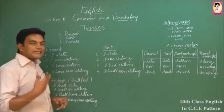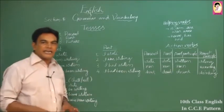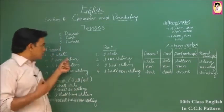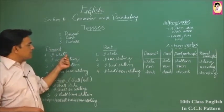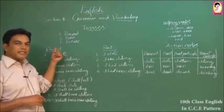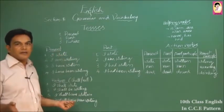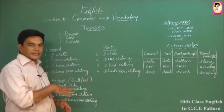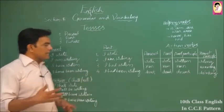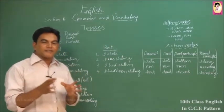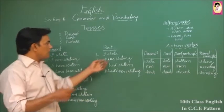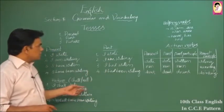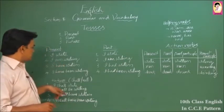Look at the difference between 'I write' and 'I wrote.' When I say 'I write,' the action is not completed — it happens repeatedly, in the past, present, and will continue in the future. That is expressed with the present simple. When I say 'I wrote,' it means the action of writing is completed — that is the past simple.